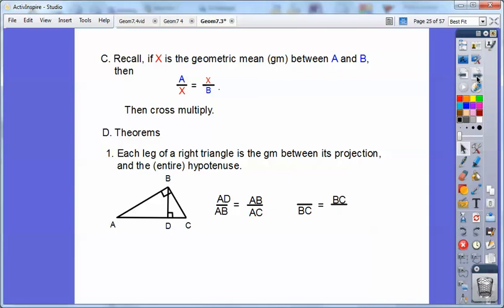And then BC is the geometric mean between its projection, DC, and the whole hypotenuse still is AC.